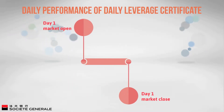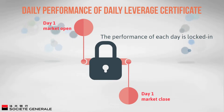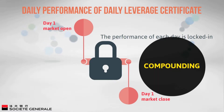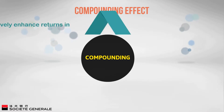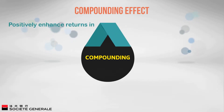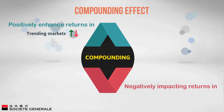In practice, the performance of each day is locked in and any subsequent returns are based on what was achieved the trading day before. This is referred to as compounding. The compounding effect can positively enhance returns in trending markets — upward or downward — while negatively impacting returns when markets are more volatile or trend sideways for long periods.